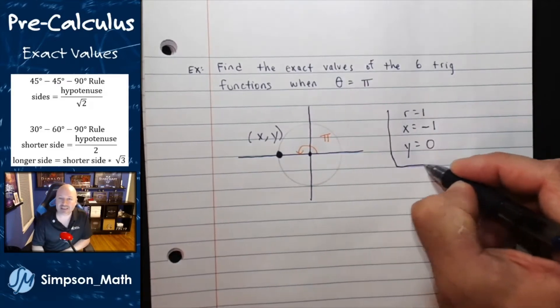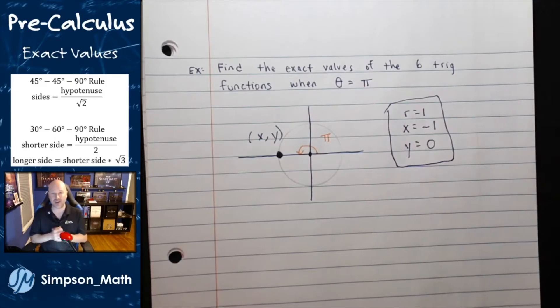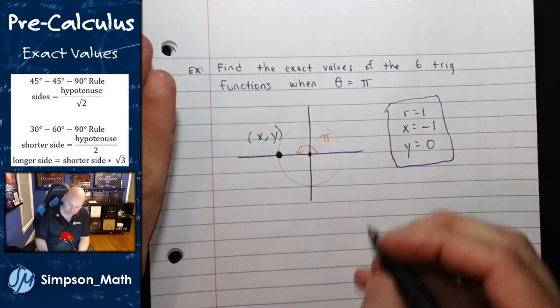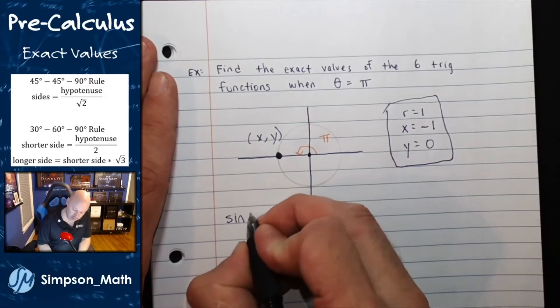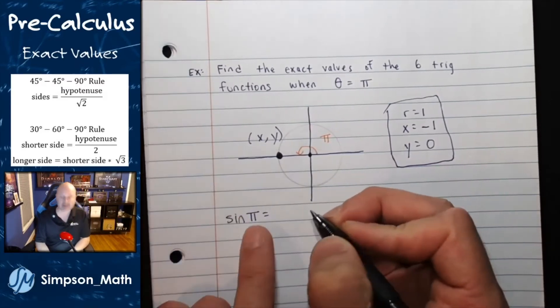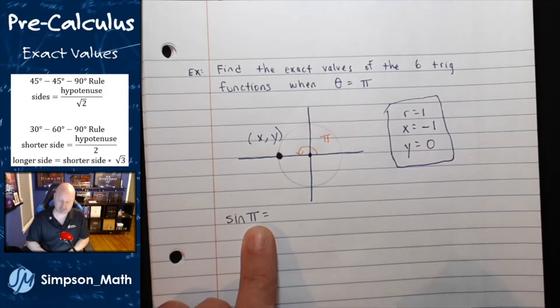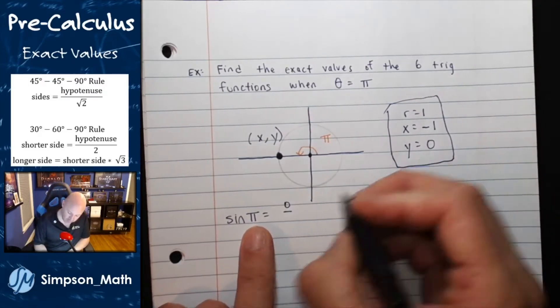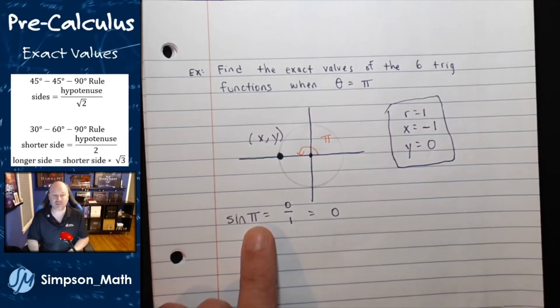Well, as long as I have these three pieces of information, I can tell you the six trig values. So, let's just go in order. Sine of pi. Sine is defined as the y value over the radius. So we have 0 over 1, which is simply 0. Sine of pi is 0.